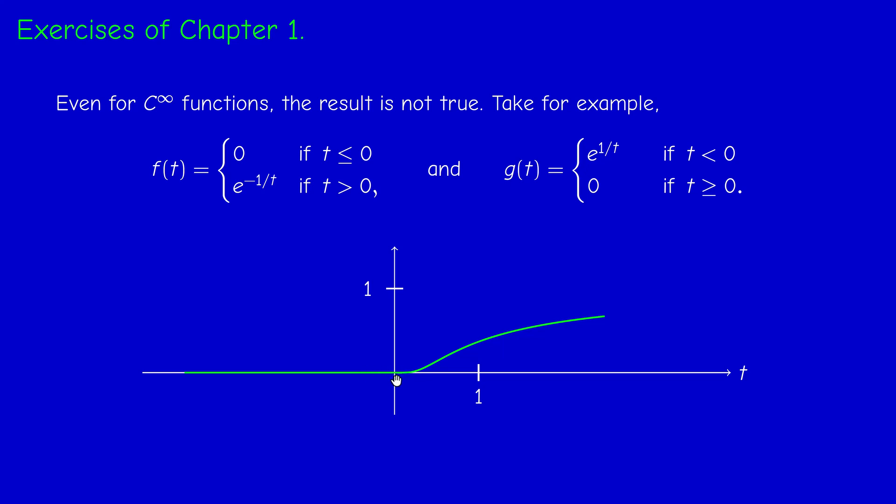And then it's increasing, actually. It changes convexity at some point, at one-half actually. And then as t tends to infinity, F tends to one. So y equals 1 is a horizontal asymptote. And G is simply the symmetric of this, it's in red. So here again, we have two C infinity functions whose product is zero, but none of them is identically zero.